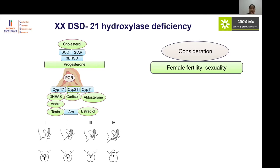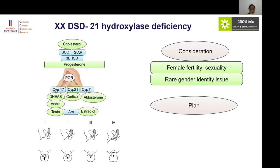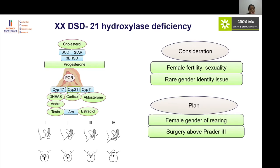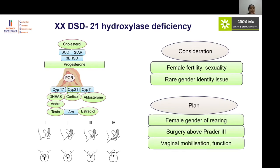In 21-hydroxylase deficiency, considering the fertility and sexual aspects, the gender of rearing is mostly considered as female. Rarely do these patients have gender identity issues. Surgery is recommended only in children who have Prader stage 3 and above of virilization, and should not be rushed — one should not be in a hurry. The surgery involves vaginal mobilization to restore functional anatomy.